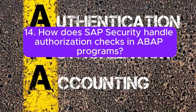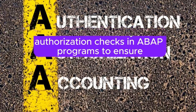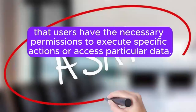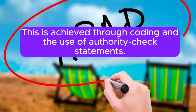Question 14: How does SAP security handle authorization checks in ABAP programs? Answer: SAP security uses authorization checks in ABAP programs to ensure that users have the necessary permissions to execute specific actions or access particular data. This is achieved through coding and the use of authority-check statements.